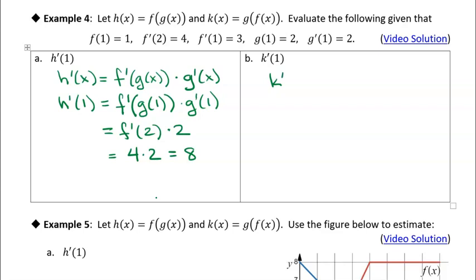So k'(x), we're going to find k'(x) first, and I'm just going to use the chain rule. The first thing I need to do is take the derivative of the outside function and leave the inside function as it is, and then multiply by the derivative of the inside function.